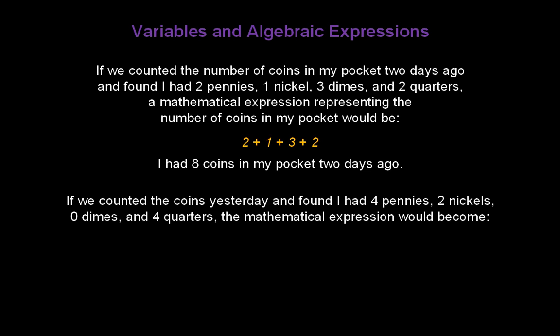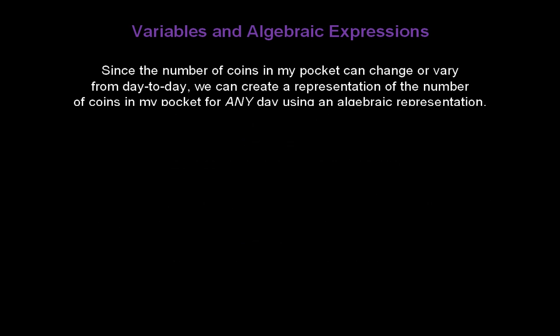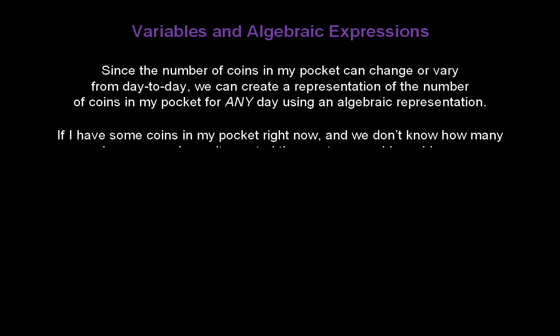Now if we counted the coins again yesterday and found I had four pennies, two nickels, zero dimes, and four quarters, the mathematical expression changes to four plus two plus zero plus four — I had ten coins in my pocket yesterday. The point is the number of coins in my pocket can change or vary from day to day, so we can create an algebraic representation of the number of coins for any day.